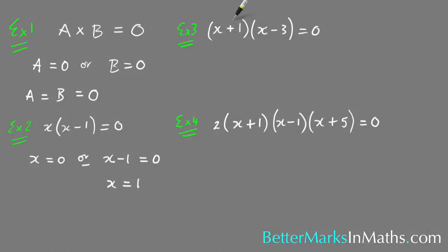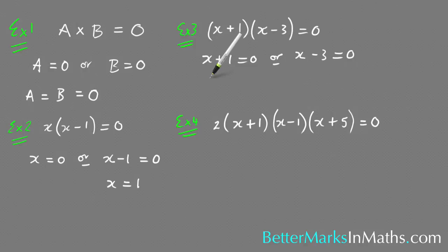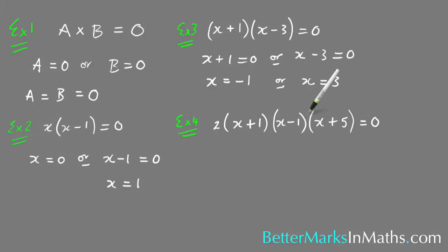Example 3 has two brackets: (x plus 1)(x minus 3) equals 0. You let each bracket equal 0, giving x plus 1 equals 0 or x minus 3 equals 0. Subtracting 1 gives x equals minus 1, and adding 3 gives x equals 3. So the answer is x equals minus 1 or x equals 3.